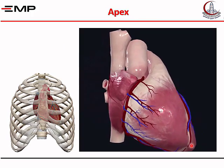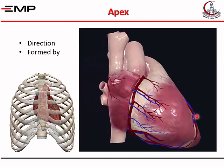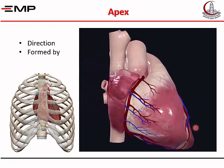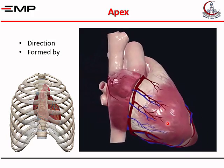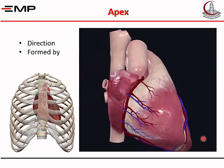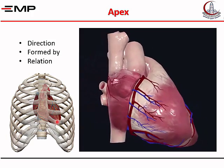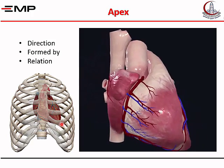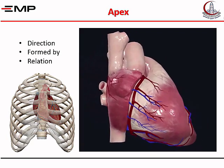Regarding the apex, you need to know its direction and what it is formed by. It is directed downwards, forwards, and to the left. It is made entirely by the left ventricle. It is related to the pleura and lung, separated from the chest wall, particularly at the left fifth intercostal space.